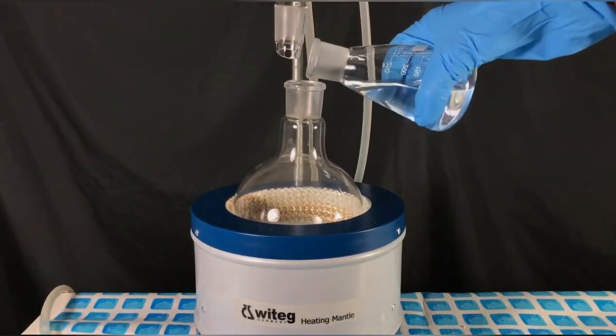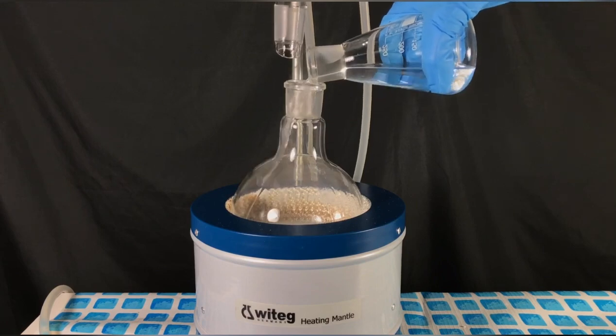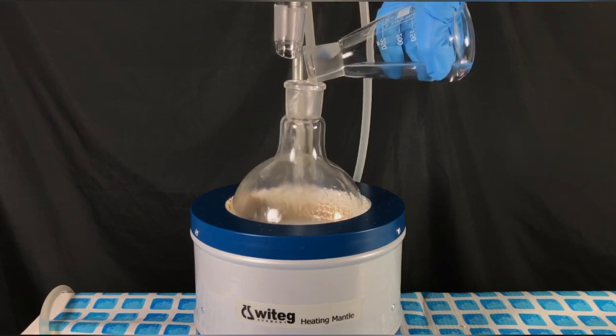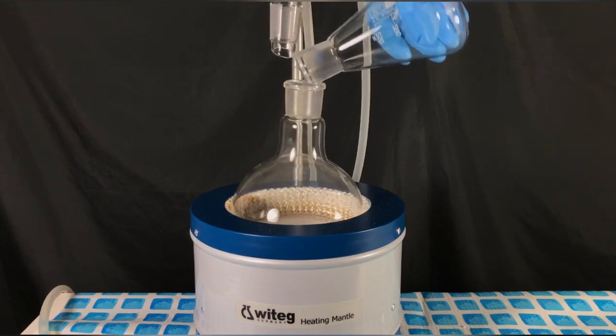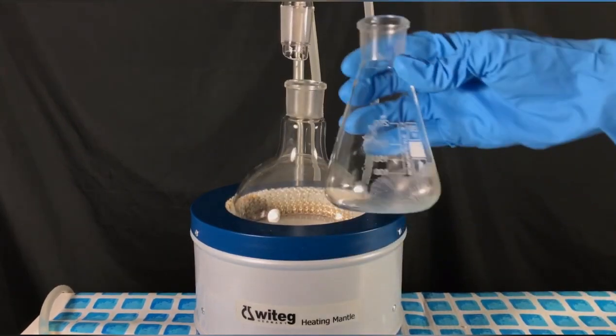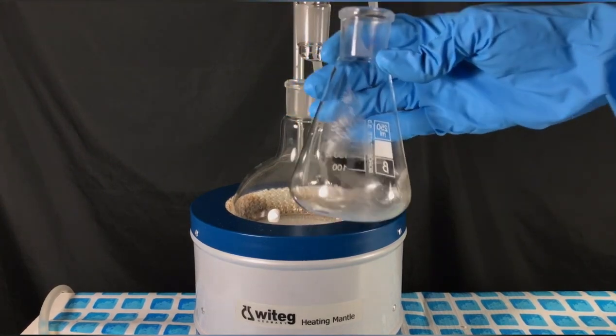The hot urea in ethanol solution was added to the 1 liter round bottom flask. Now look closely at the Erlenmeyer flask. What's interesting is that upon cooling, those nice urea crystals formed on the wall of the Erlenmeyer.